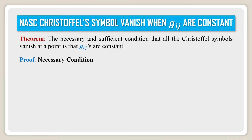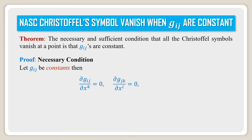Necessary condition: First, let us assume Gij are constant. Then we have ∂Gij/∂Xk = 0, ∂Gjk/∂Xi = 0, and ∂Gki/∂Xj = 0, because Gij are constant.